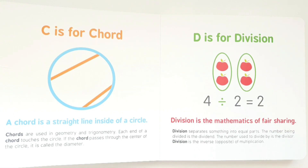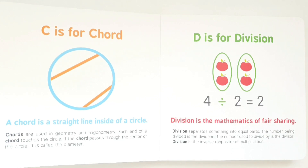D is for division. Division is the mathematics of fair sharing. Division separates something into equal parts. The number being divided is the dividend. The number used to divide by is the divisor. Division is the inverse, or opposite, of multiplication.